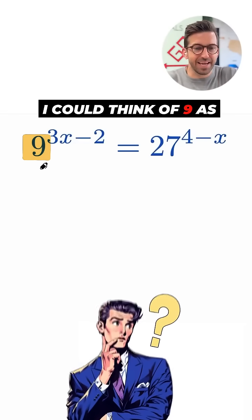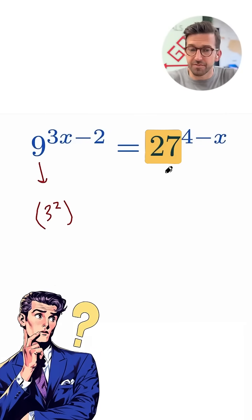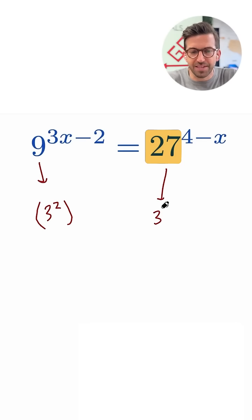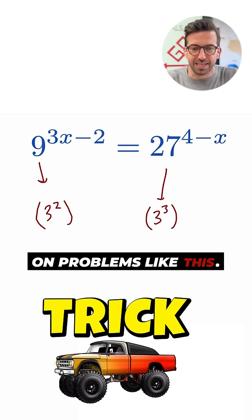I could think of 9 as 3 squared, so I could rewrite that as 3 squared, and I could think of 27 as 3 cubed. Now that's not a coincidence. They did this on purpose, and this is the trick you're going to repeatedly see on problems like this.